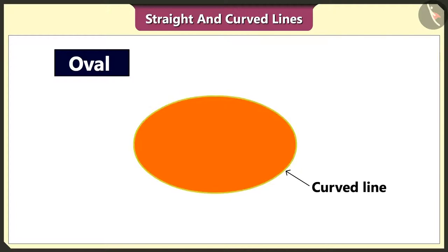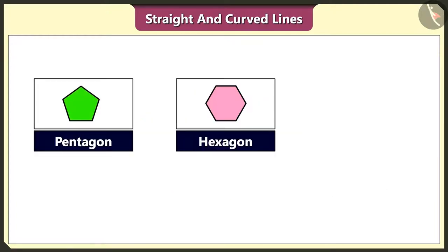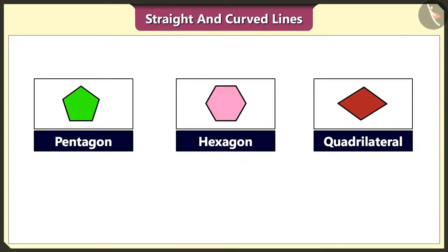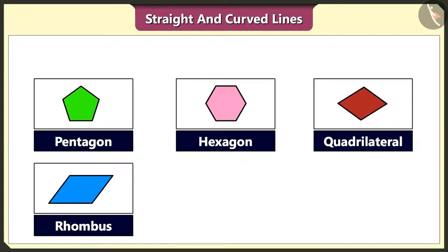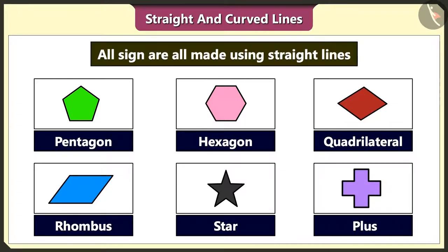You are right. Do you know that pentagon, hexagon, quadrilateral, rhombus, star and plus sign are all made using straight lines? Yes.